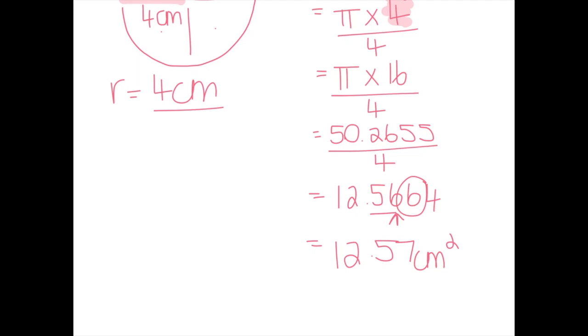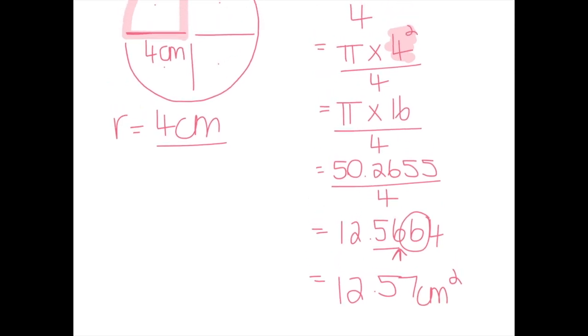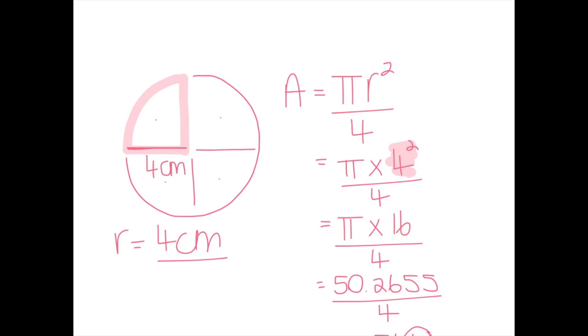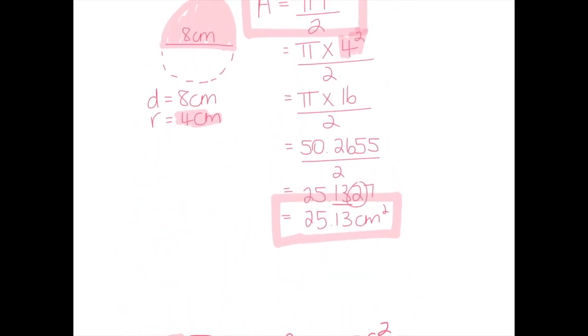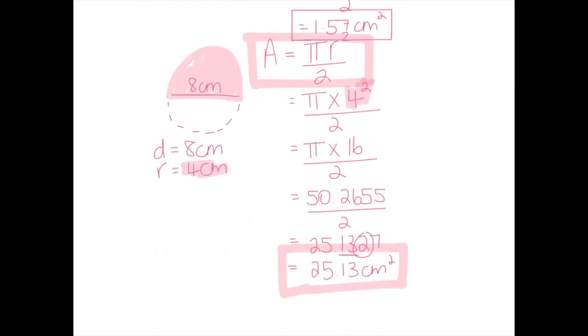Because I did actually use the same numbers for the last two questions, I'll just show you the comparison. So that quarter is twelve point five seven squared, and if I go up, twenty five point one three, so half of that, which is to be expected, because a quarter is a half of a half.